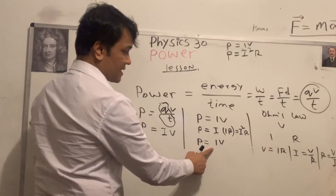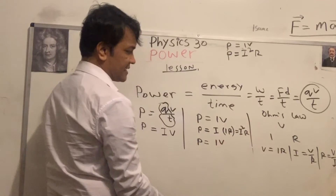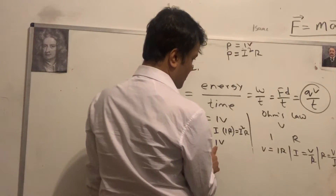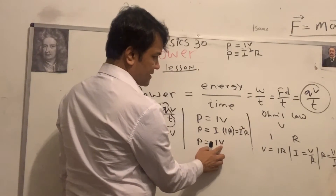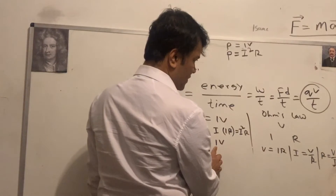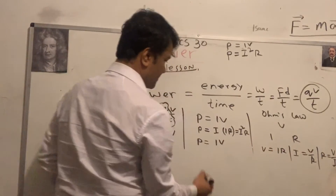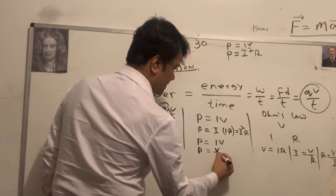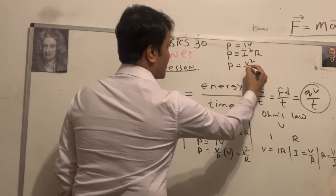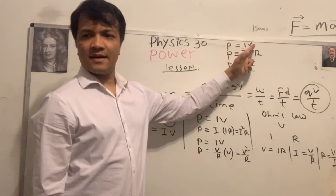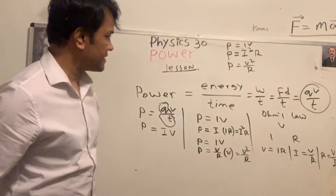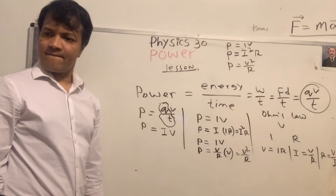So electric power has three forms: P = IV, P = I²R, and P = V²/R. All of these are defined in your physics reference table from 2006. But it's better to derive them than just memorize — that way you understand the beauty behind them.